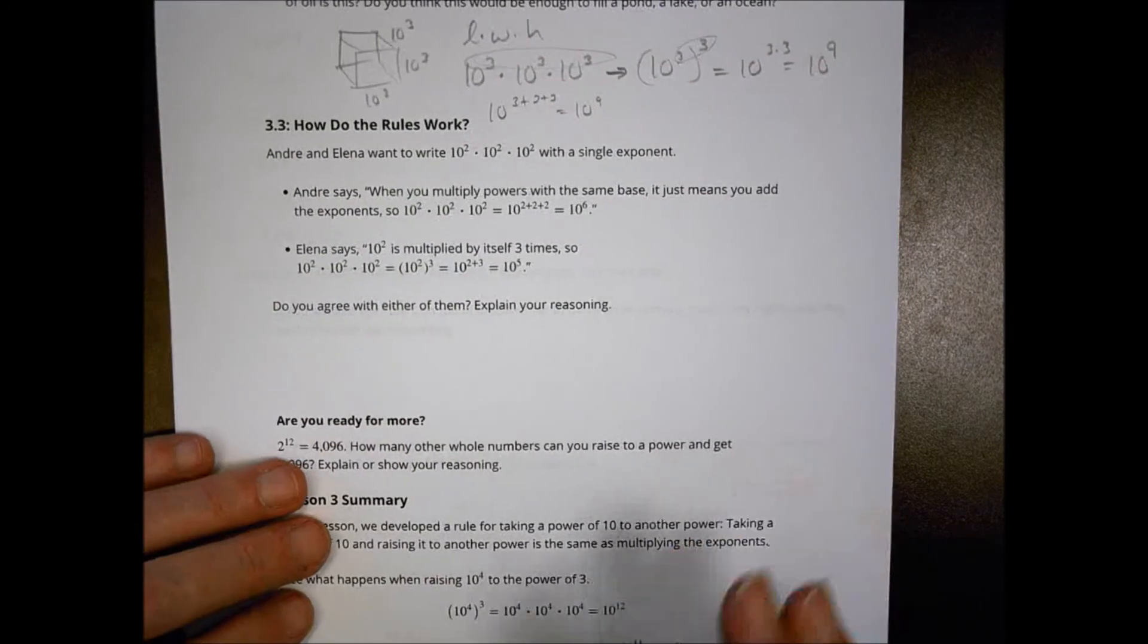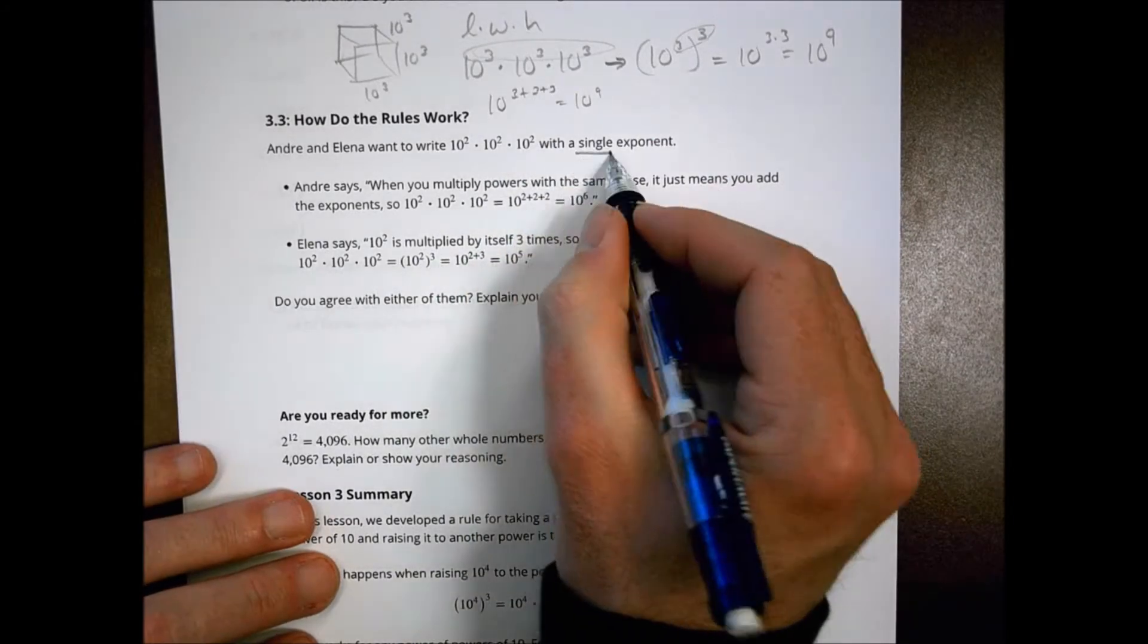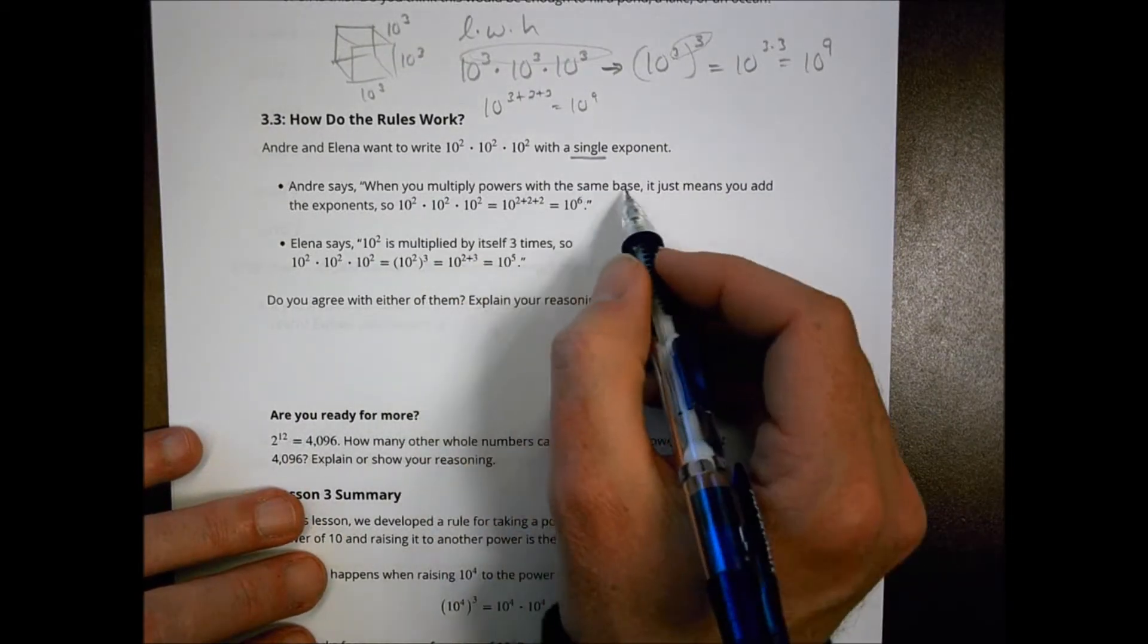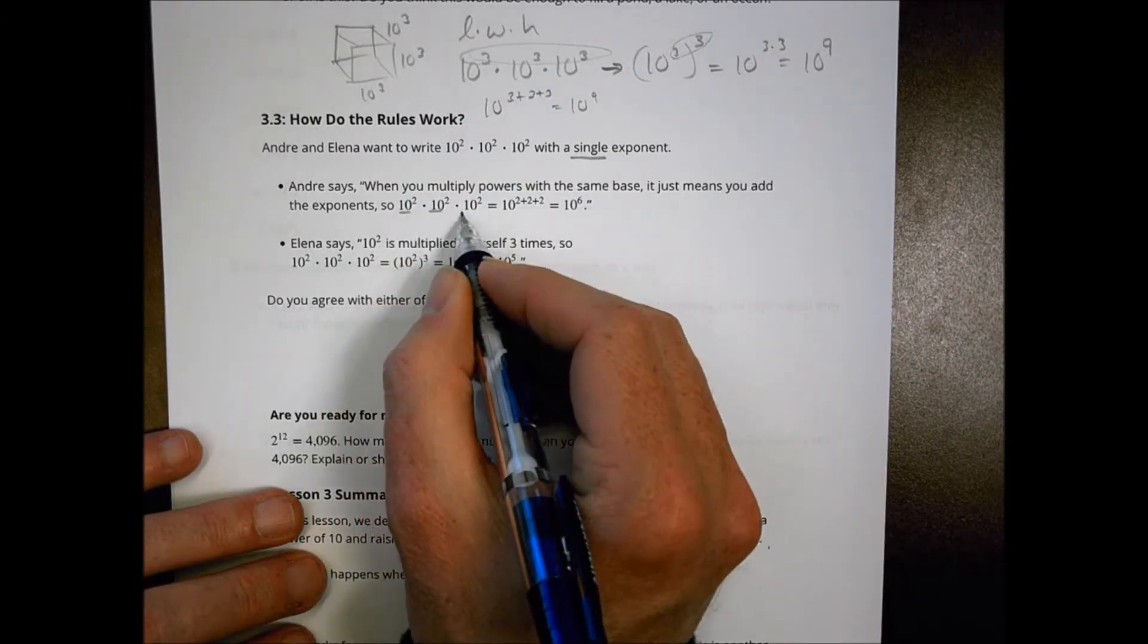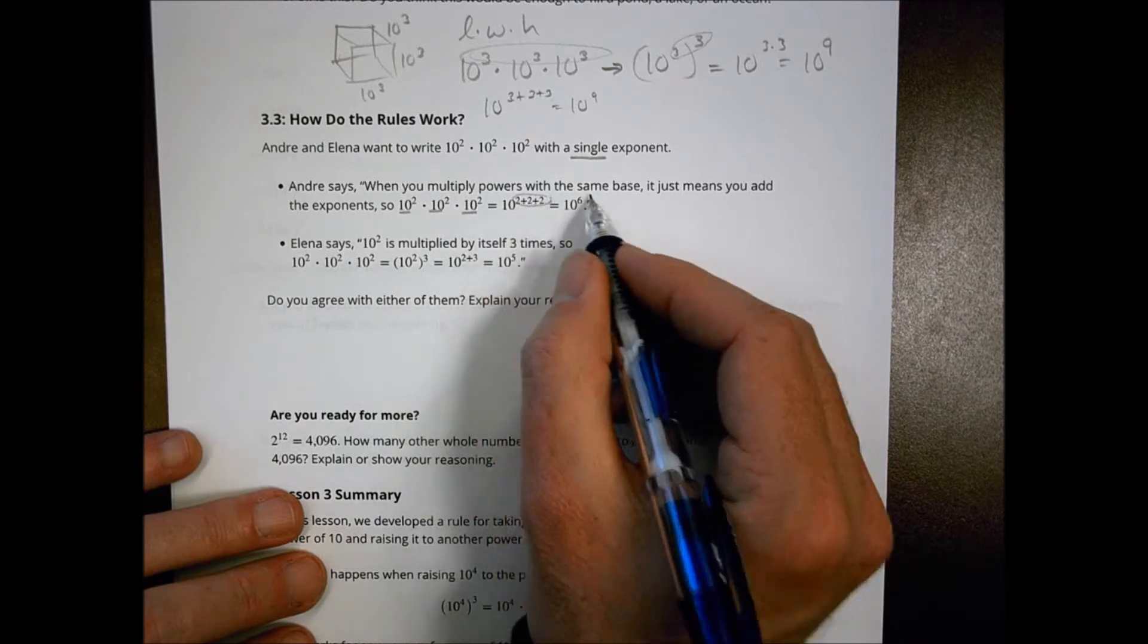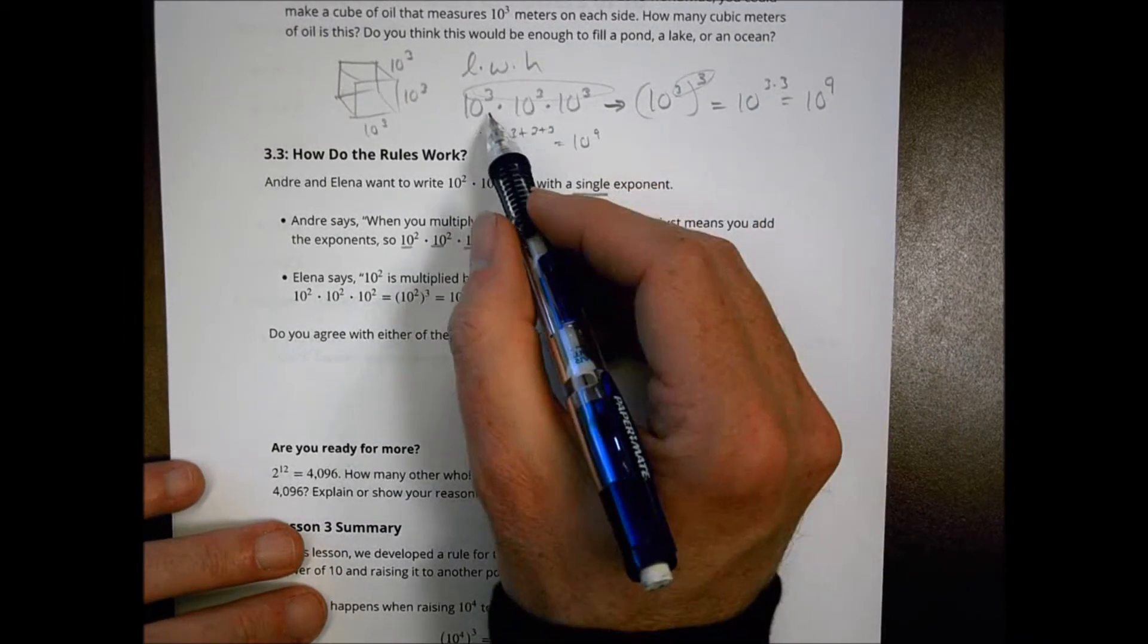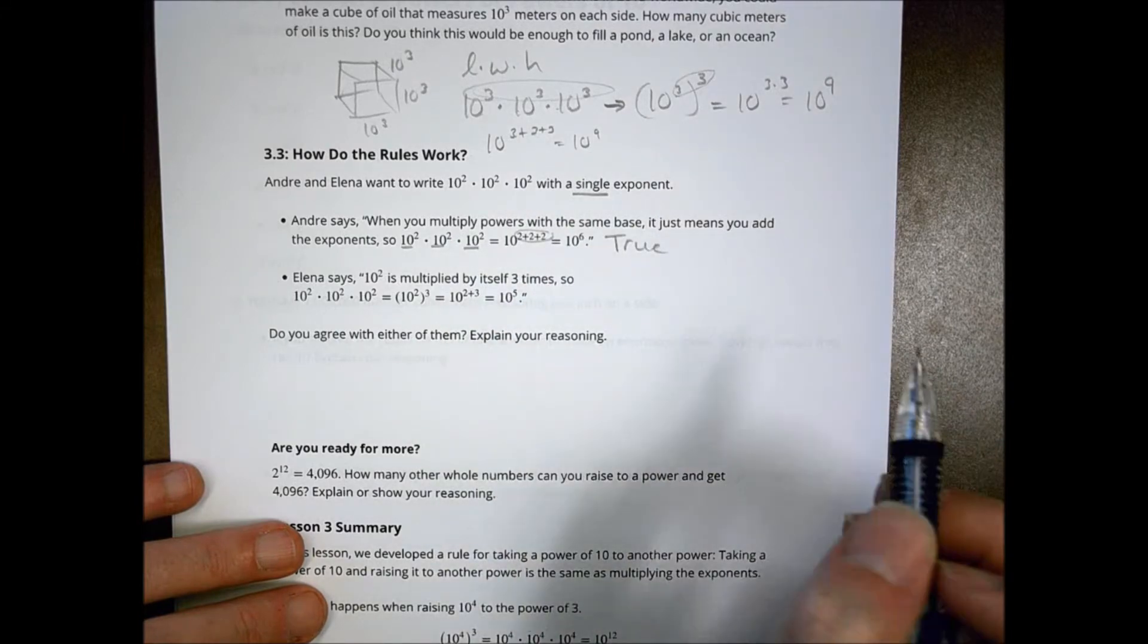How do the rules work? Andre and Elena want to write 10 squared times 10 squared times 10 squared with a single exponent. Andre says when you multiply powers of the same base, it just means you add the exponents. So 10 squared times 10 squared times 10 squared, and so we add them up: two, two, and two becomes 10 to the sixth. I would agree with that. That is a true statement.